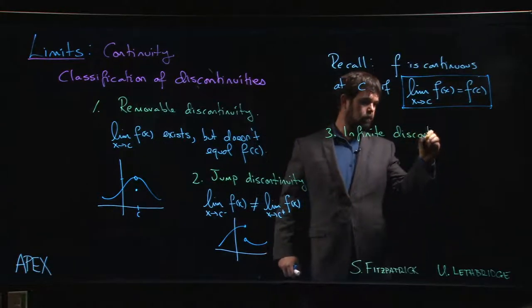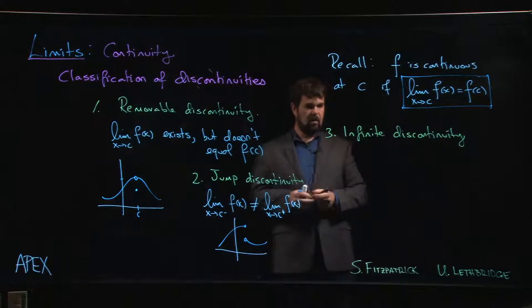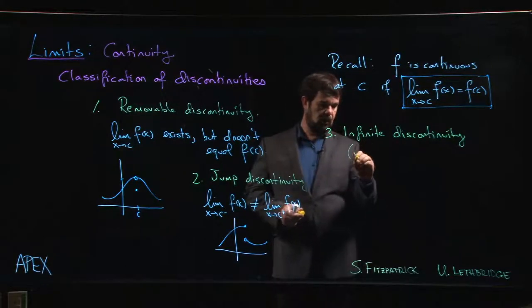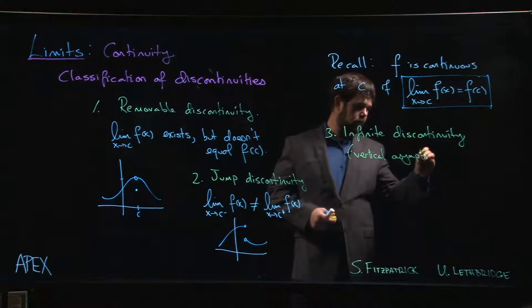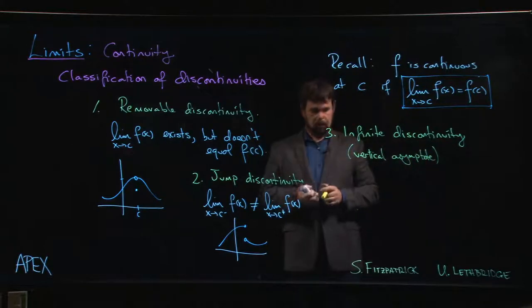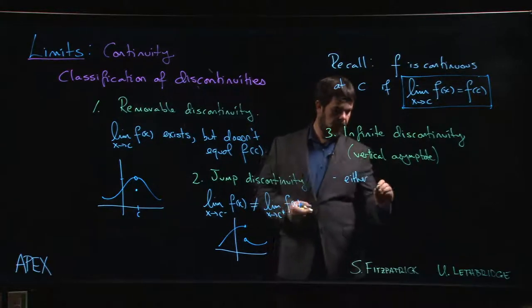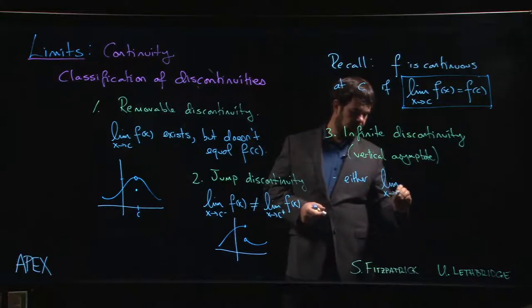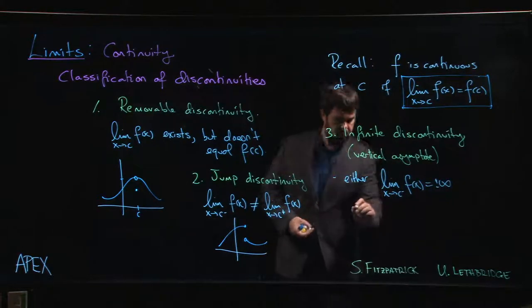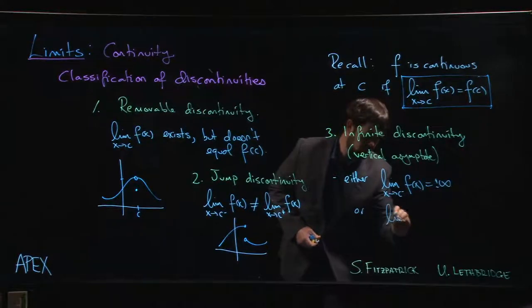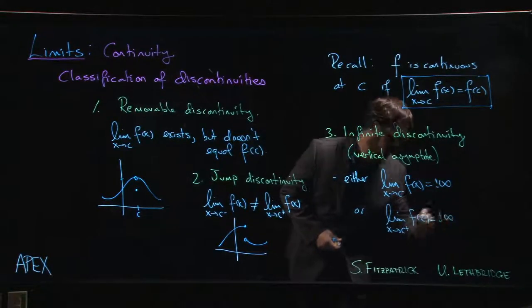The third type that we can get a handle on can be called an infinite discontinuity. An infinite discontinuity is going to be a discontinuity that occurs because our function has a vertical asymptote. In this case, either the left-hand limit is infinite—plus infinity or minus infinity—or the right-hand limit, or both.